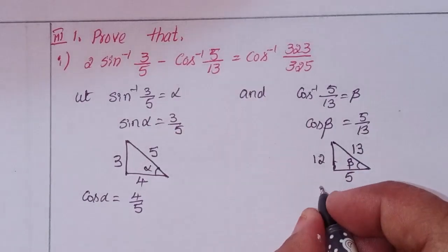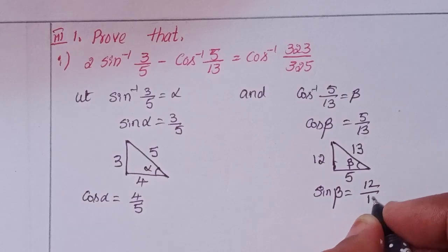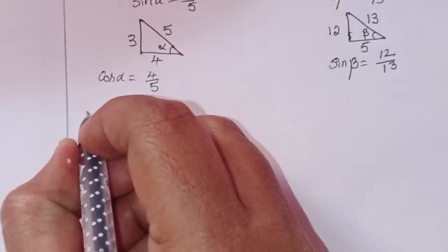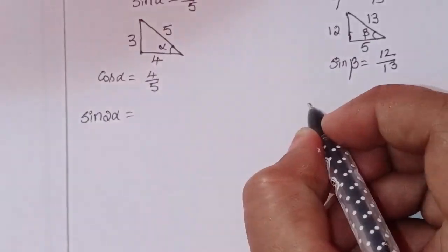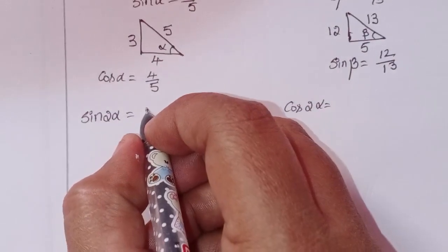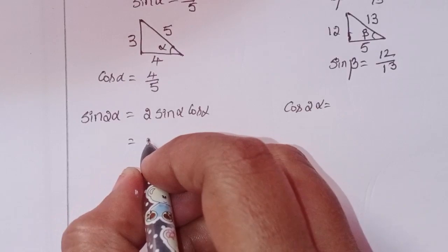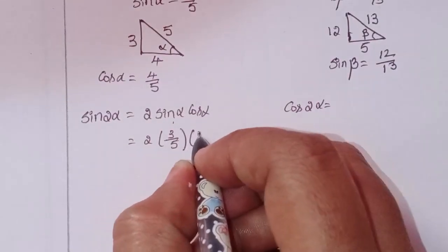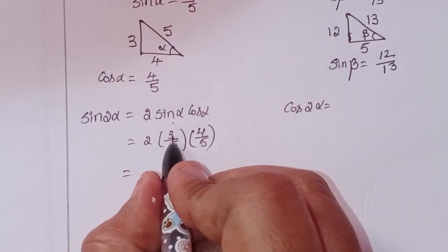So sin(beta) = 12/13. Now find sin(2α) and cos(2α). sin(2α) formula: 2·sin(α)·cos(α) = 2 × (3/5) × (4/5) = 24/25.